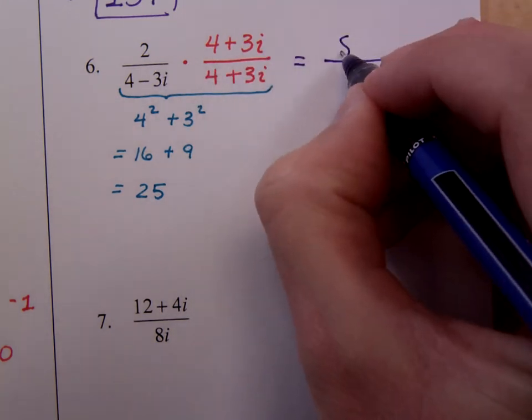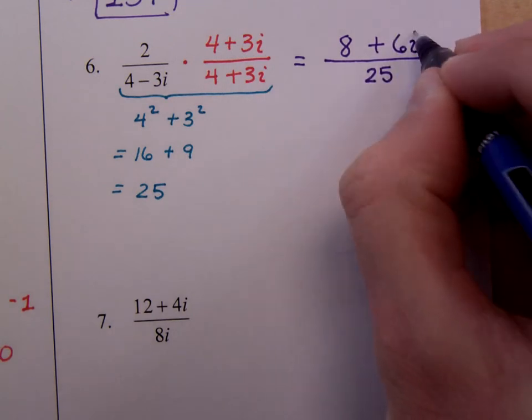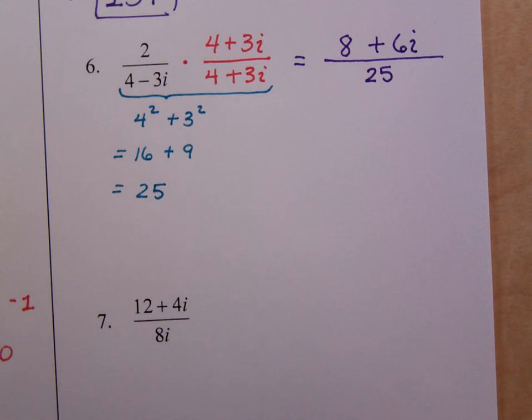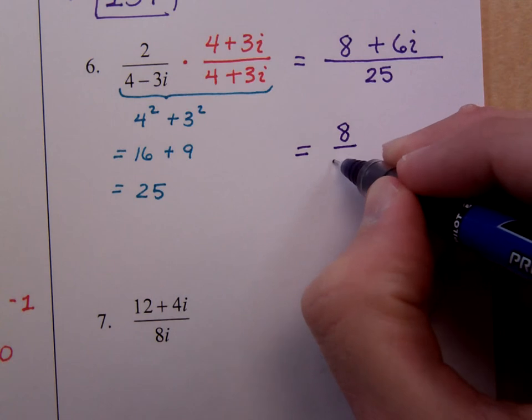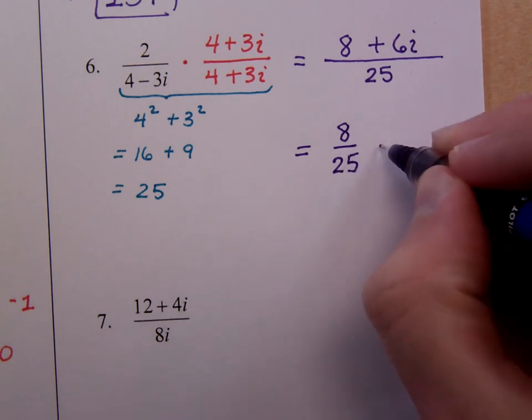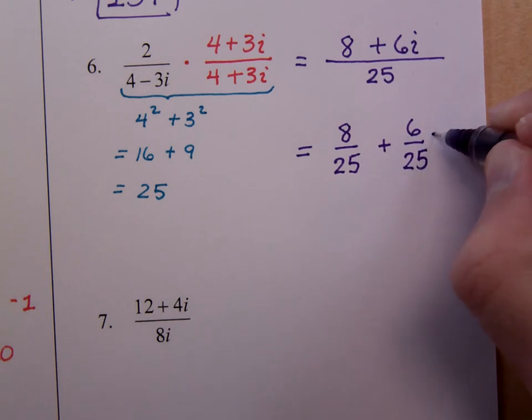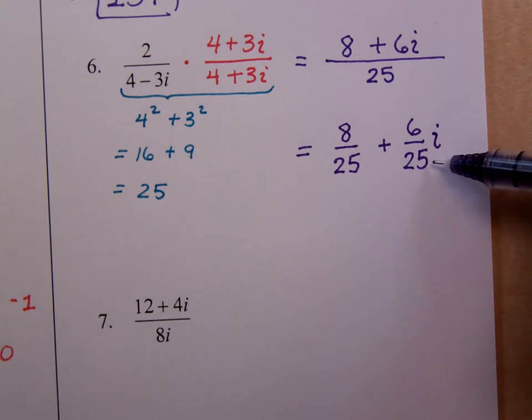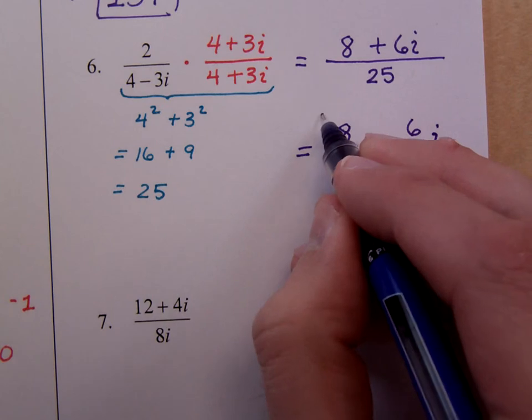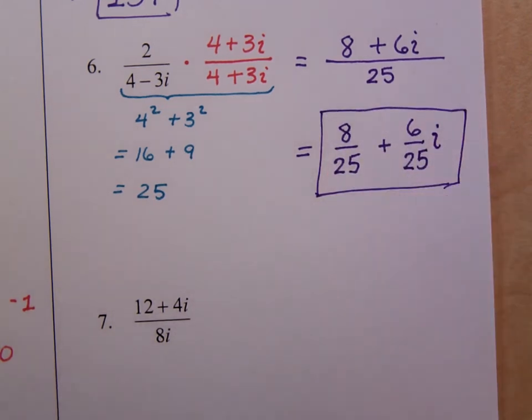So 2 times 4 is 8. 2 times 3i is 6i. Now, we don't leave it like this. We want to separate this so we can see the real part, which is 8 25ths, and the imaginary part, which is 6 25ths i. You want to make sure you put your i just to the right side here, not next to the 25. It does make a difference. Now, naturally, you would try to reduce these guys if you could, but there's not much you can do here.